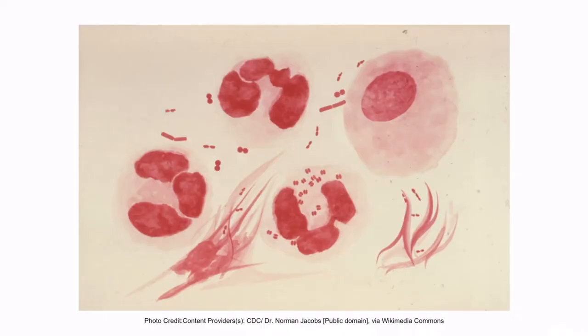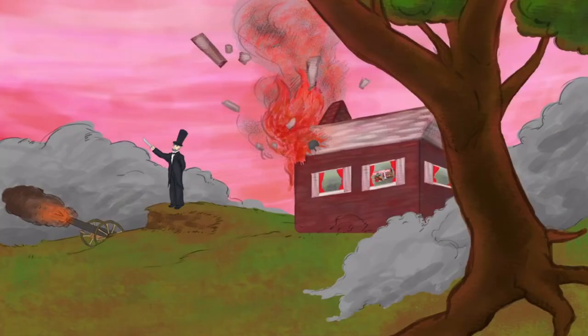This is a gram stain of Neisseria, which we covered in the last video, but here it is again for your review. The stain is red or pink, which is why it's a gram-negative organism, and the bacteria are circular shaped. Also notice that they form little pairs right next to each other. This is why Neisseria are classically described as gram-negative diplococci.